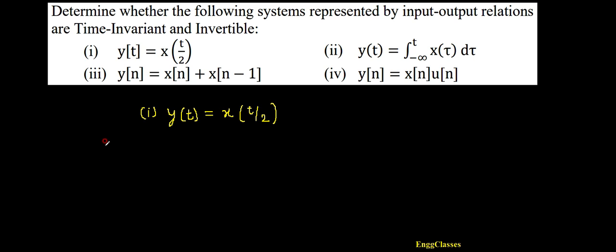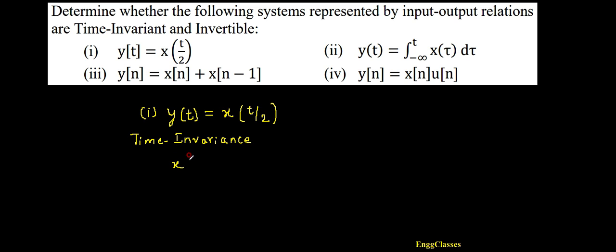First, let me test for time invariance. Is this system time invariant or not? The definition of time invariance is: a shift in the input leads to an identical time shift in the output. So the statement has two parts — first is a shift in the input. Input is x(t), and the shift in the input would be x(t - t₀).